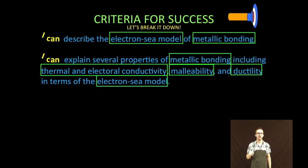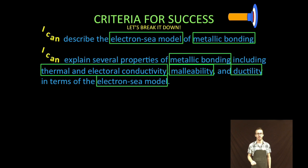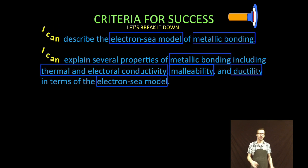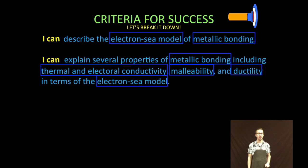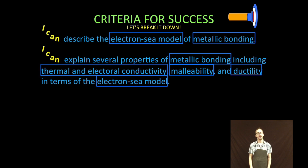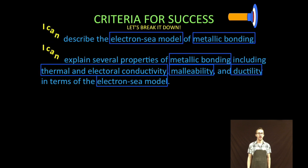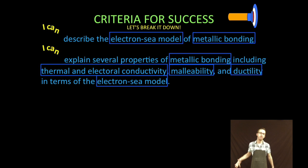First, we are going to describe the electron sea model of metallic bonding. Second, we are then going to explain several properties of metallic bonding including thermal and electrical conductivity, malleability, and ductility in terms of the electron sea model.